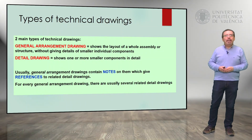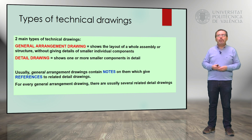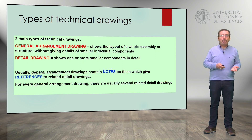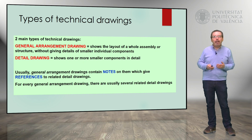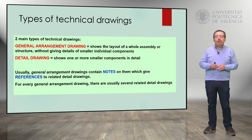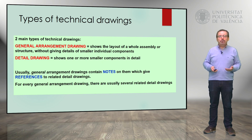Basically, we have two main types of technical drawings. On the one hand, we have general arrangement drawings. They show the general layout, the overall assembly or structure, without giving specific details of the smaller or individual components. On the other hand, we have detailed drawings that show one or more smaller components in more detail. Usually, general arrangement drawings contain notes that give references to related detailed drawings, and for every general arrangement drawing, there are usually several detailed drawings.